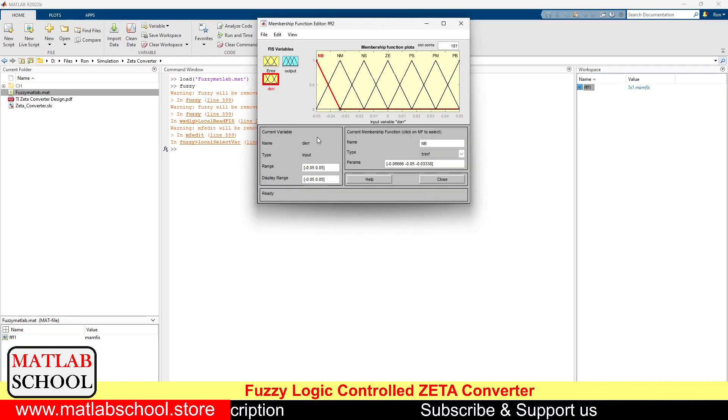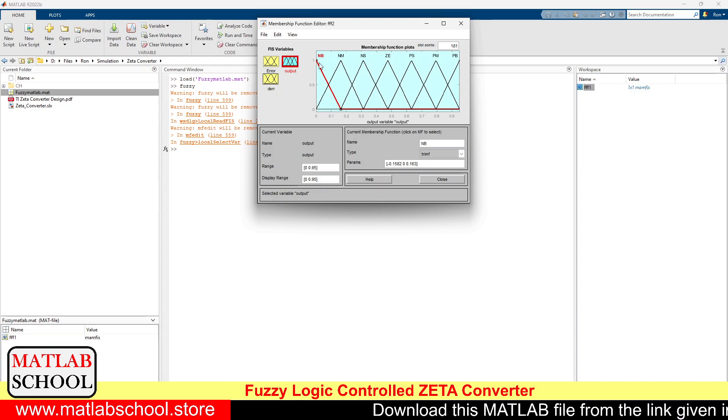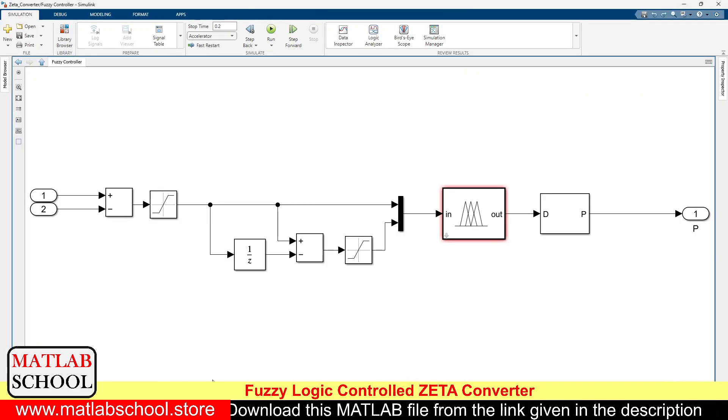Right, here you can see the values of error and change in error. Error and change in error are the inputs. So with these values we are going to simulate it. See here, you can see through a mux we are giving the error and change in error as input.